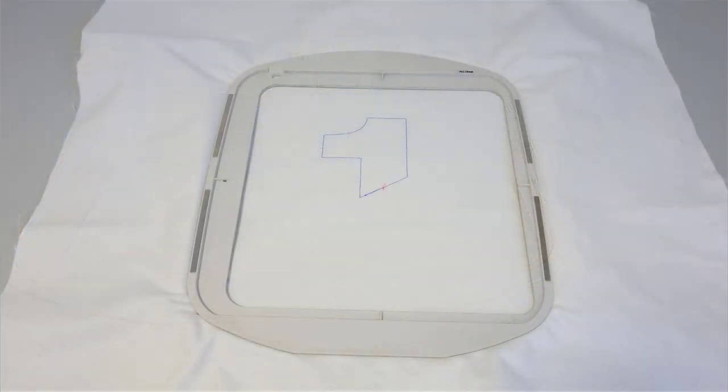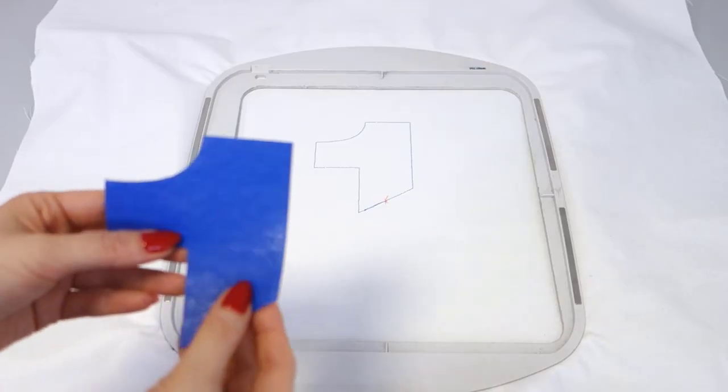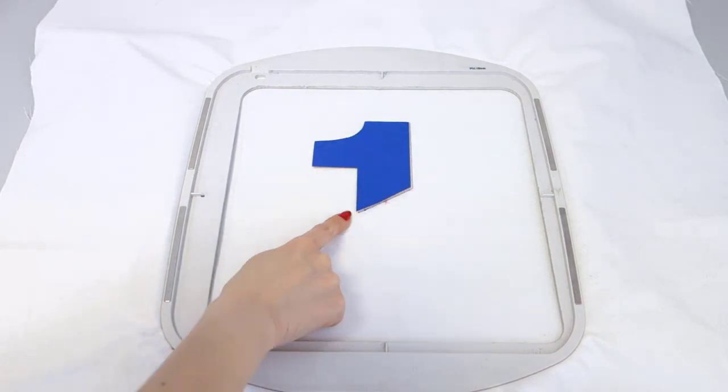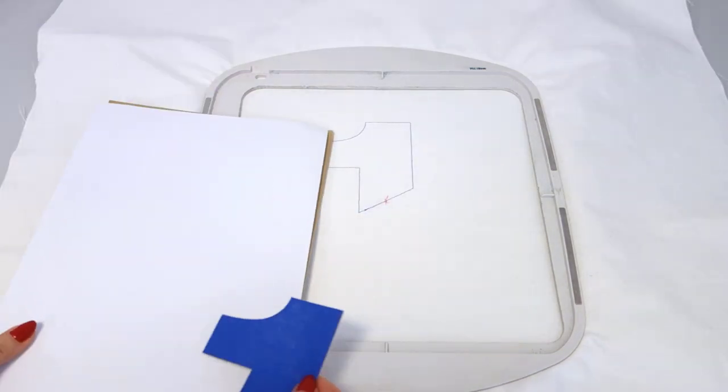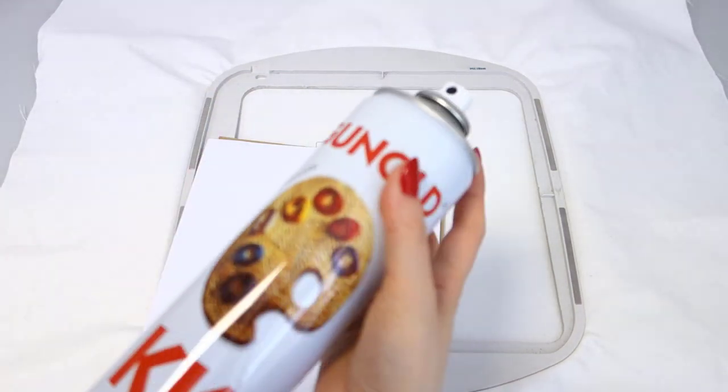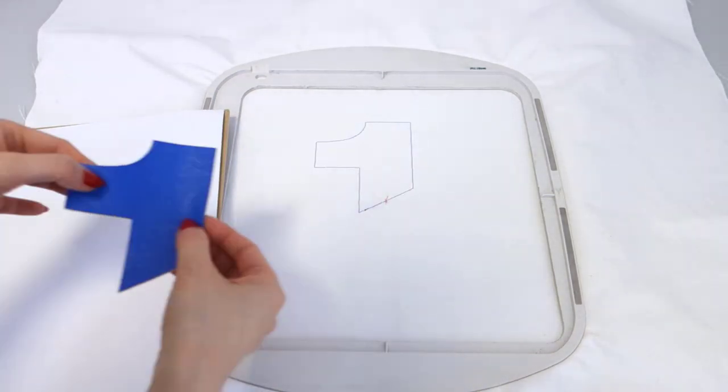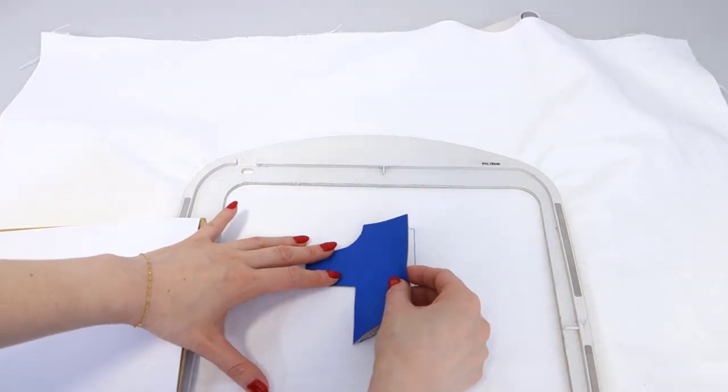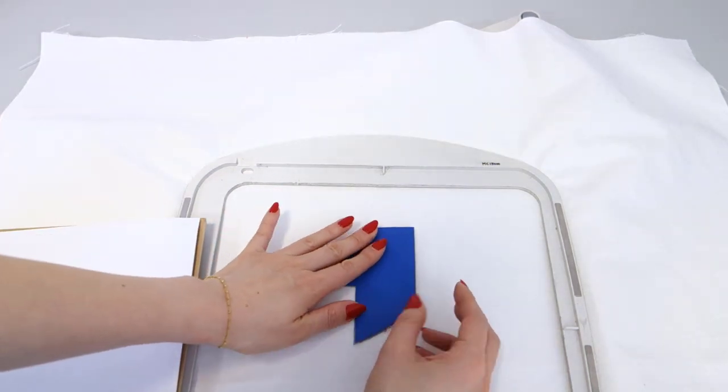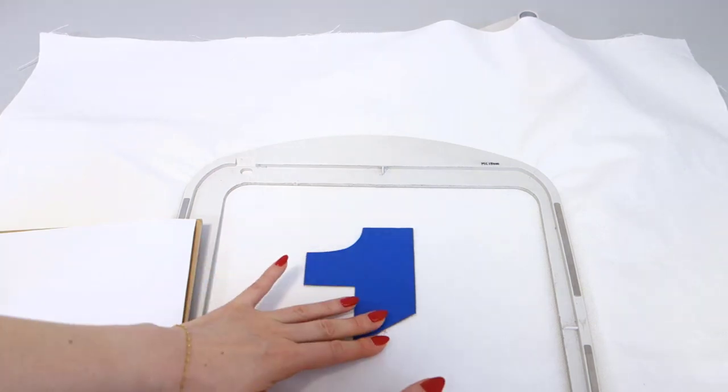Take the hoop out from the machine and place the applique fabric you cut earlier on the base fabric. Use adhesive spray to hold it in place. Attach it in a way that it doesn't go beyond the guide stitch or fall short of it. Smooth out any wrinkles or bubbles carefully.